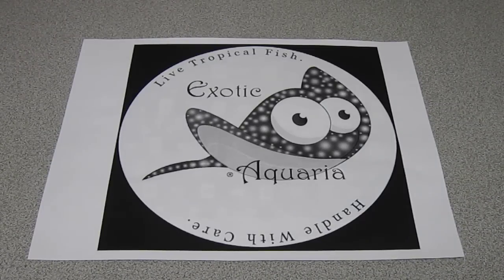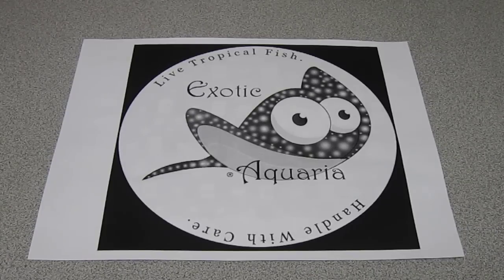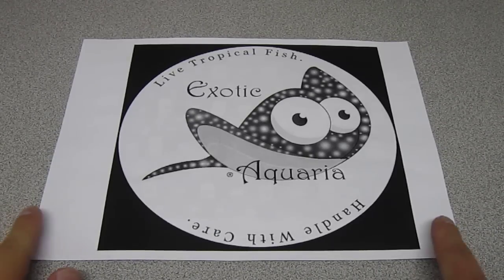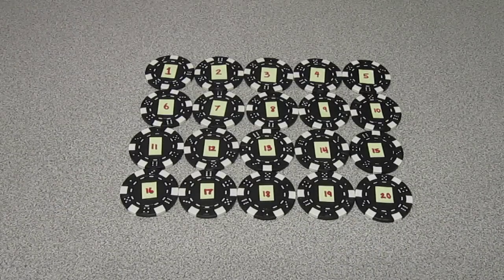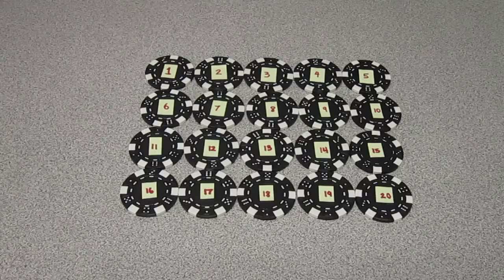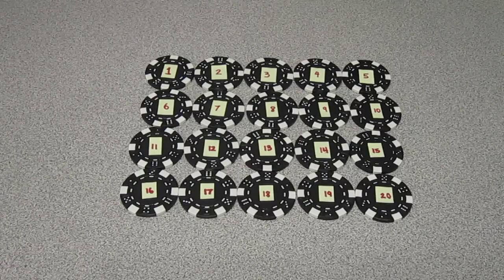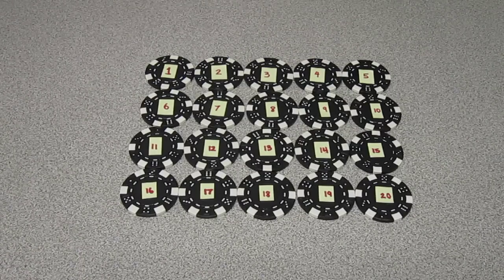For this raffle, we will be picking from third to first place, saving the grand prize for our last draw. As you can see here, there are 20 numbers. Each number represents a token which you have purchased for the draw. We will now flip over all 20 tokens and scramble them.